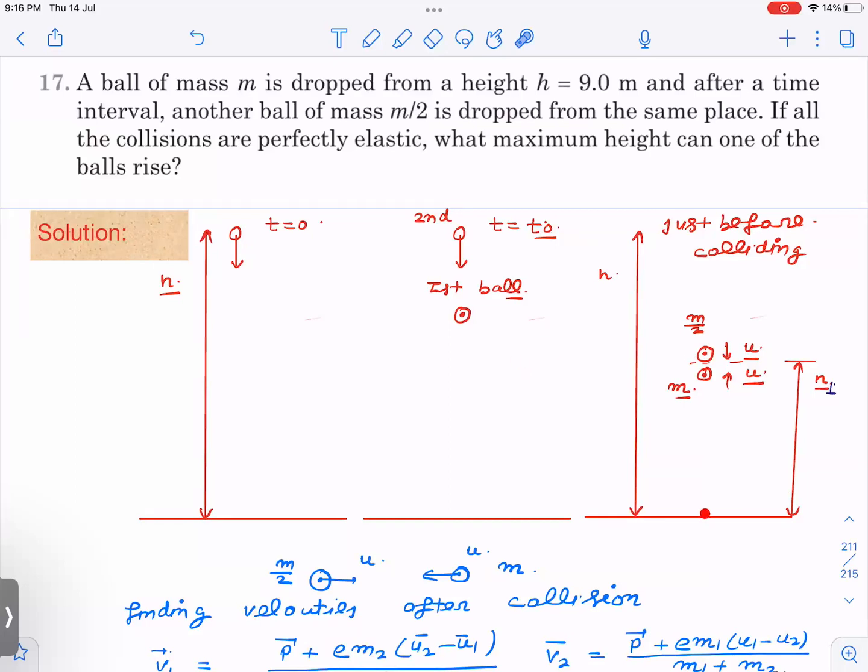the ground, speed will not change - collisions are elastic. So here the speed is - both will have same speed. m/2 has u, this also has u. Let us say this height is h₁, at h₁ collision happens. So what I have to do now is calculate velocities after collision.